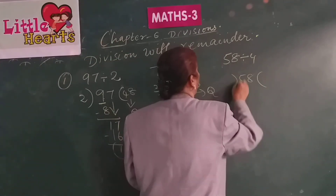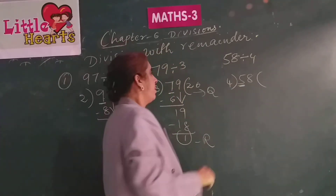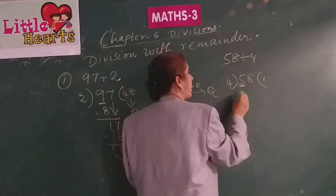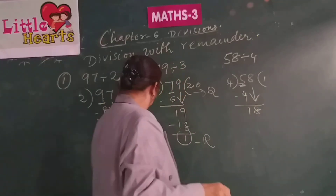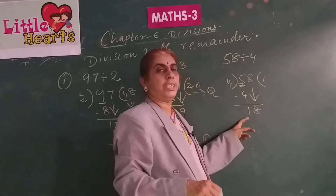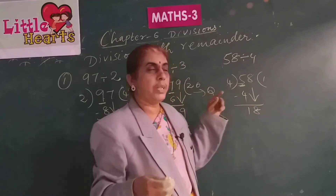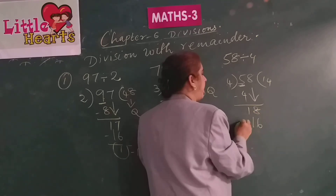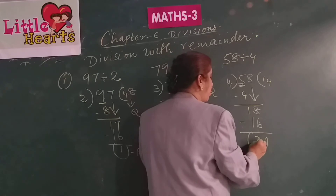58 divided by 4: as 5 is greater than 4, consider only 5. 4 ones are 4; 5 minus 4 is 1. Bring down 8 to get 18. Read 4 table: 4 fours are 16; 4 fives are 20 which is greater than 18; so go with 4 fours are 16. 18 minus 16 is 2. So the quotient is 14 and the remainder is 2.